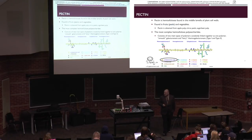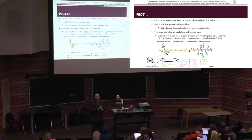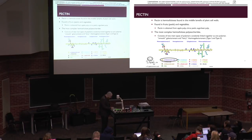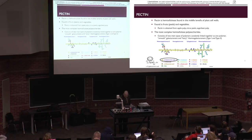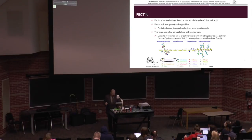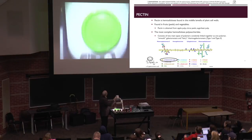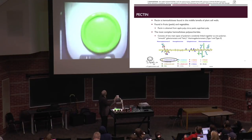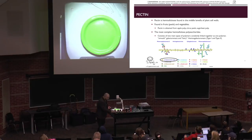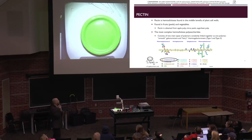Another really important polysaccharide is pectin, commonly found in jam. Pectin is a heteropolysaccharide, meaning it's comprised of different sugar molecules—at least two different types. One of those sugars has a carboxylic acid on its side functional unit.